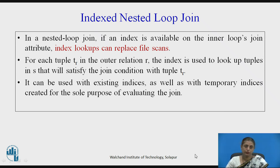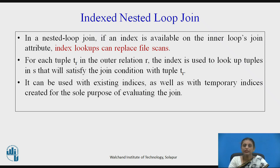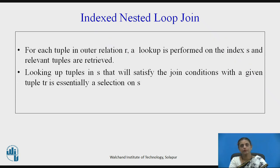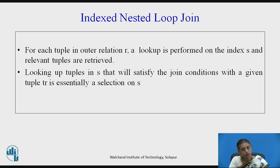In index nested loop join, if an index is available on the inner loop join's attribute, then we replace the file scan with index lookups. The attribute value on the joining attribute will be found using the index. For each tuple TR in the outer relation R, the index is used to look up the tuples in S that satisfy the join condition with the tuple of R. Existing indices can be used, or temporary indices can be created for evaluating the join operation. For each tuple in outer relation R, a lookup is performed on the index of S and relevant tuples are retrieved.